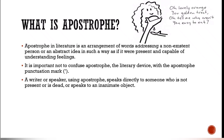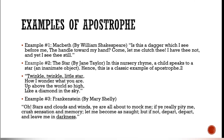A writer or speaker using apostrophe speaks directly to someone who is not present, or is dead, or speaks to an inanimate object. An example is Macbeth by William Shakespeare — in this, the speaker talks to the dagger, which is an inanimate object.